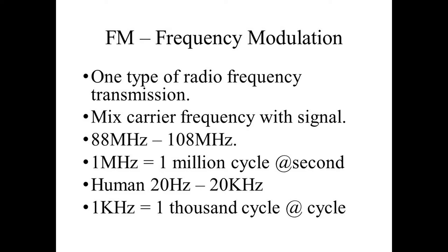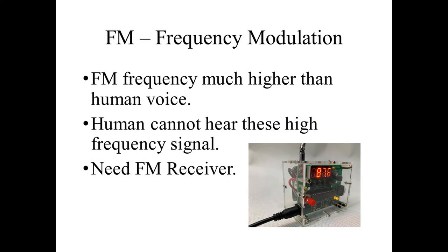FM is a means of mixing a carrier frequency with some signal which needs to be transmitted. It operates within the range of 88 MHz to 108 MHz. One MHz means one million cycles per second. Human beings can hear 20 Hz to 20 kHz maximum — one kHz is 1000 cycles per second. As you can see, FM transmission operates at a much higher frequency than human voice.